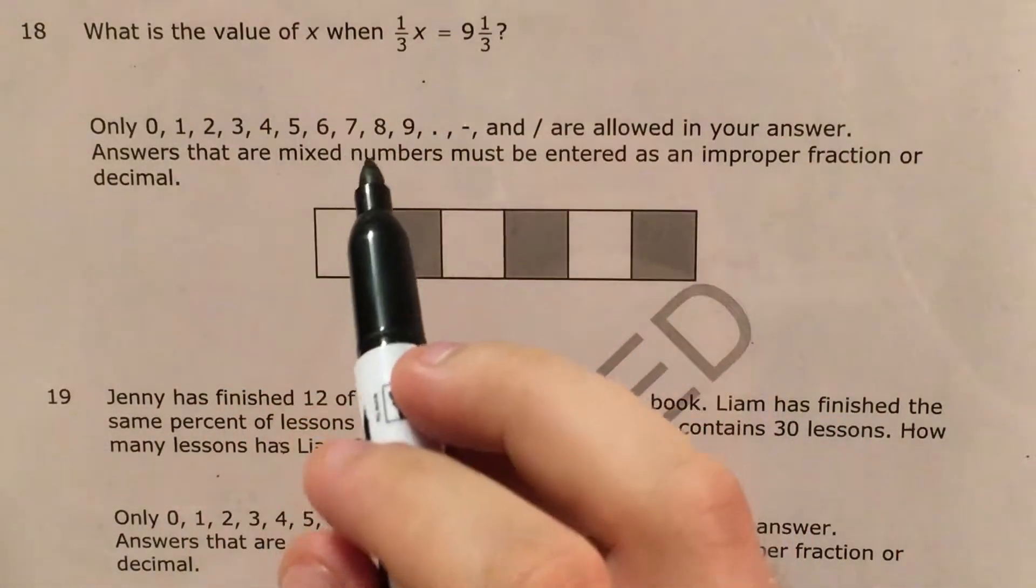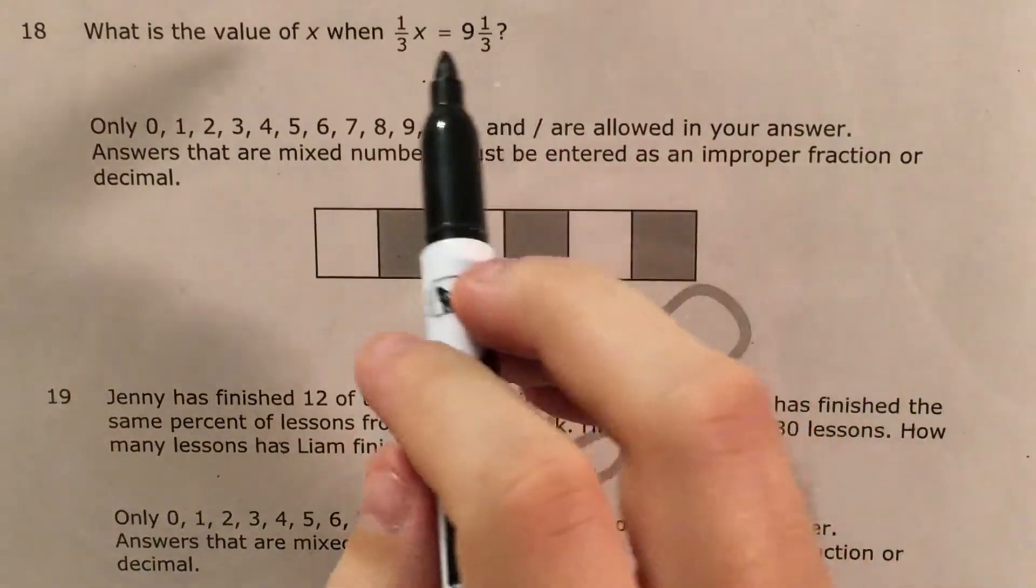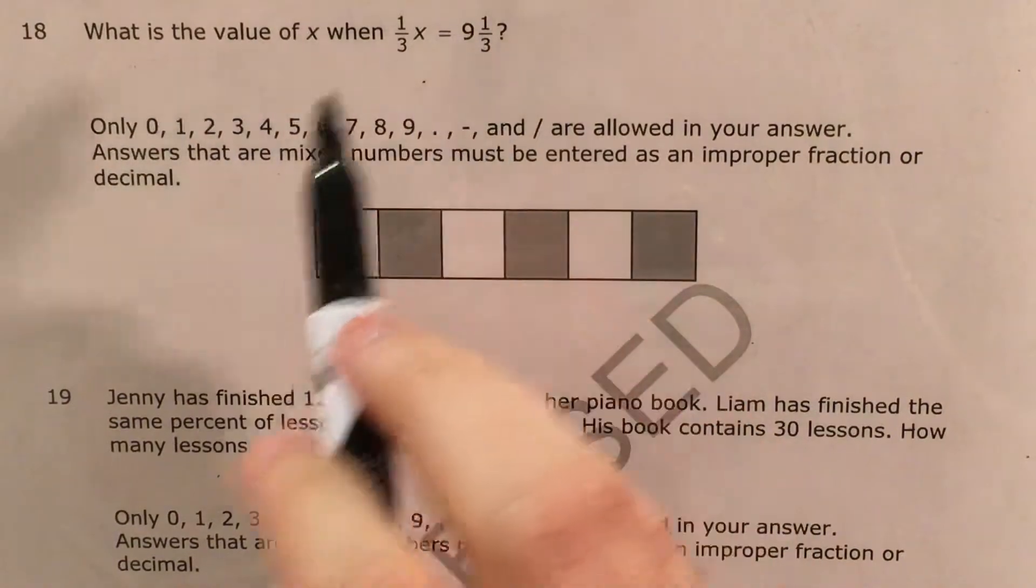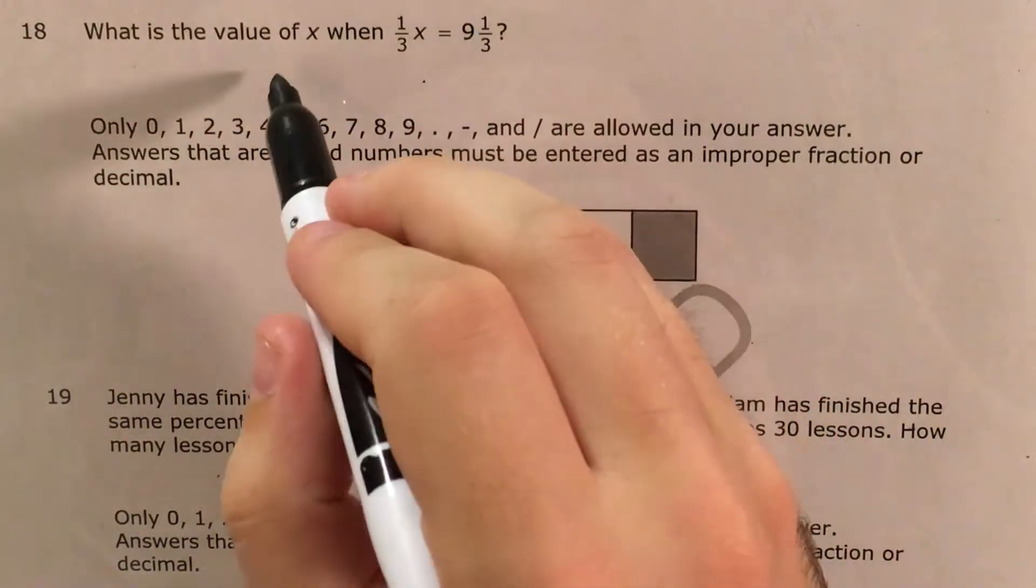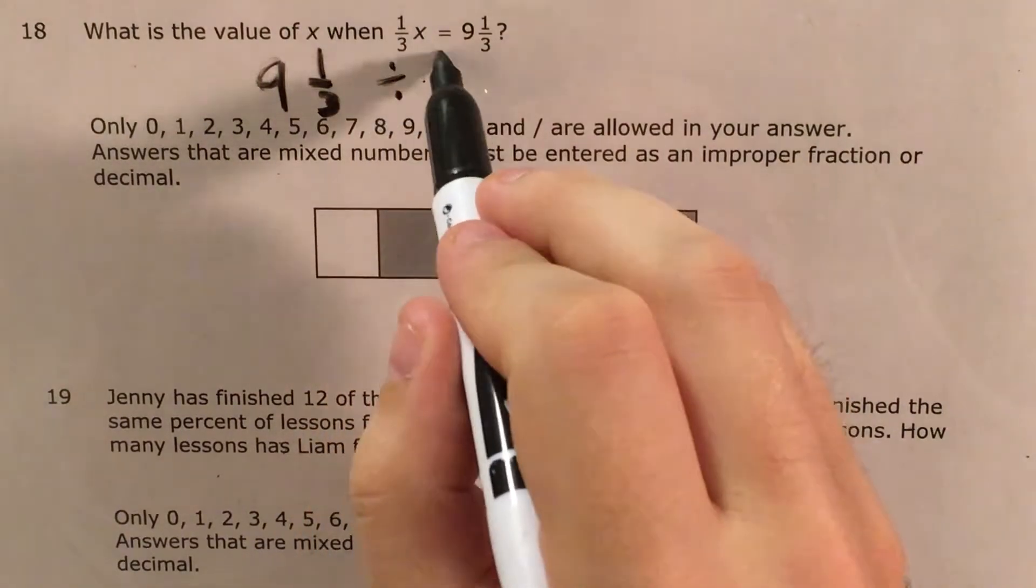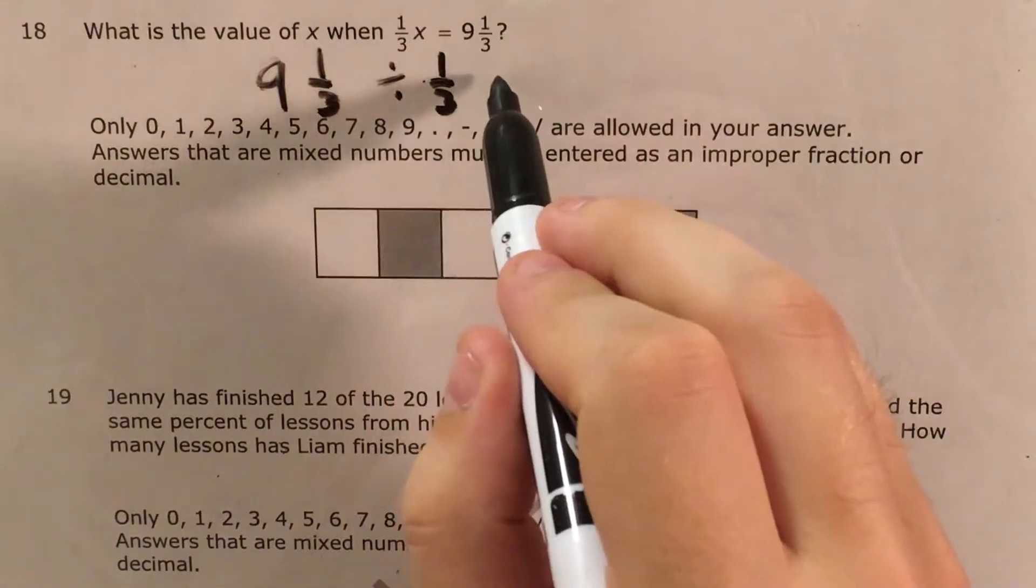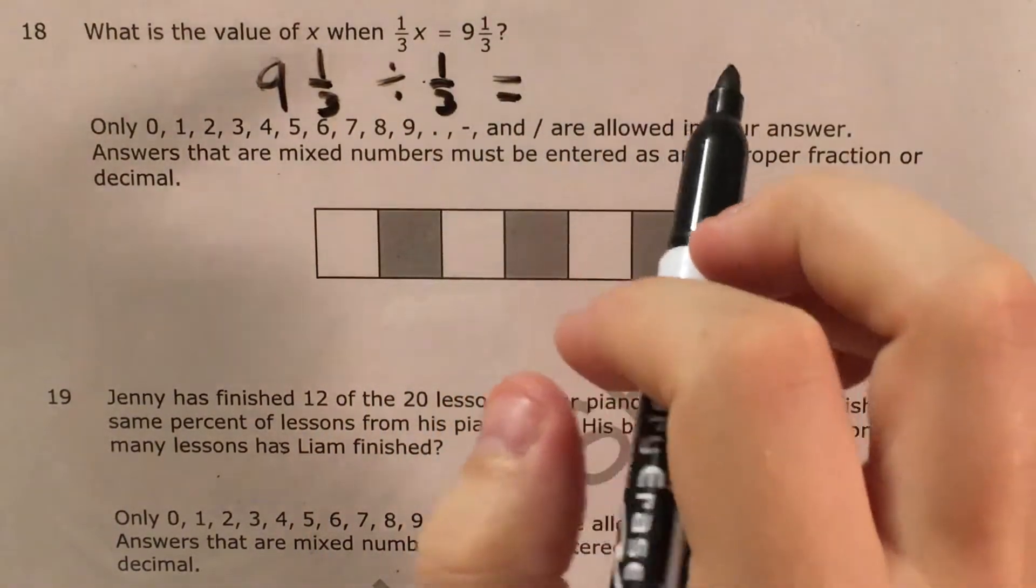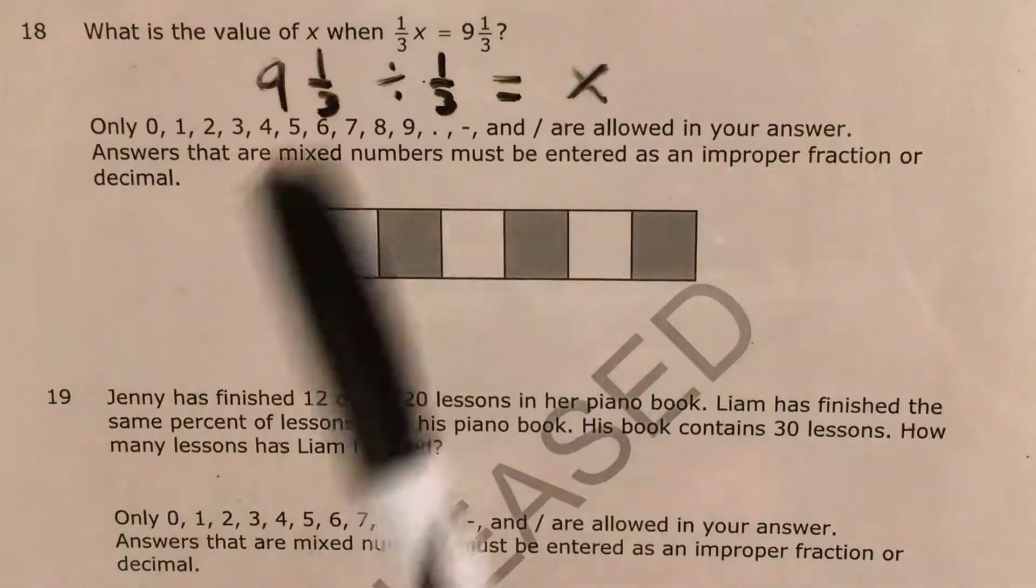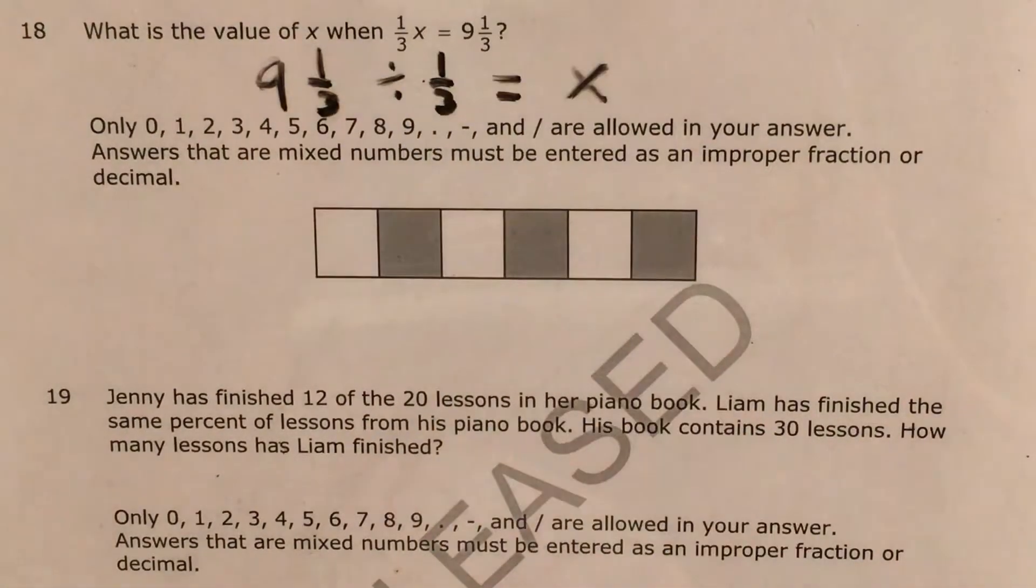And the second thing I'm going to do is remind myself of fact families. And I'm going to tell myself, okay, if I know that 1/3 times some number equals 9 and 1/3, then I also know that 9 and 1/3 divided by 1/3 equals my variable, the number that I don't know what it is yet. But I just know that when I multiply it by 1/3, I get 9 and 1/3.